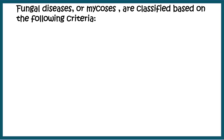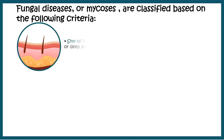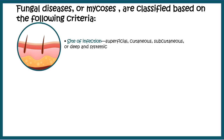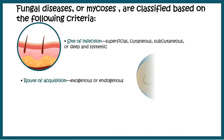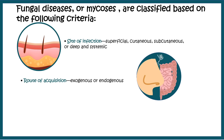Any fungal disease can be classified based on the following criteria. Based on the site of infection, they can be superficial, cutaneous, subcutaneous, deep, or systemic. Based on route of acquisition, they could be exogenous versus endogenous. And based on virulence, they could be primary or opportunistic.